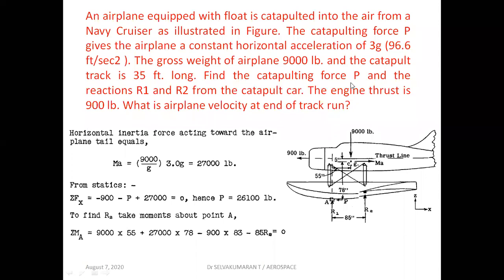Find the catapulting force P and the reactions R1 and R2 from the catapult car. The engine thrust is 900 pounds, direction also given. The inertia force is acting to the right because the airplane is being accelerated. MA equals W/G into acceleration; GG cancels, so W into 3 gives 27,000 pounds. Resolving sigma Fx = 0: minus 900 (engine thrust) minus P plus 27,000 (inertia force) equals 0, hence P equals 26,100 pounds.